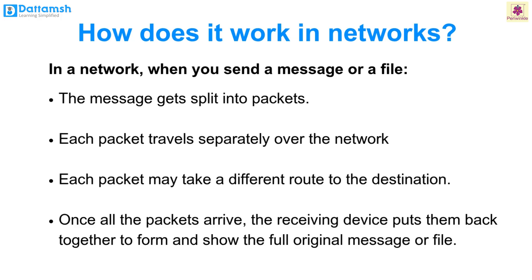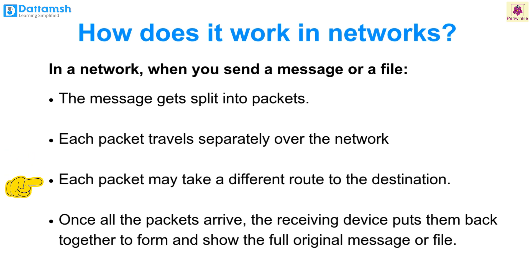How does communication work in a network? When you send a message or a file, the message gets split into data packets. Each packet travels separately over the network and may take a different route to the destination. Once all the packets arrive, the receiving device puts them back together and shows the original message or file.